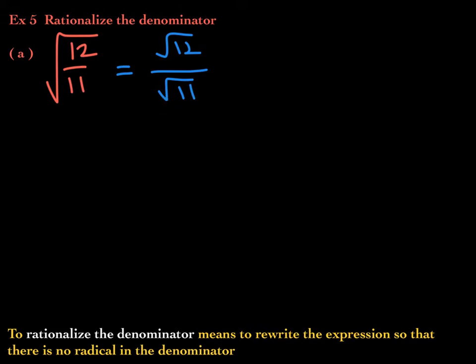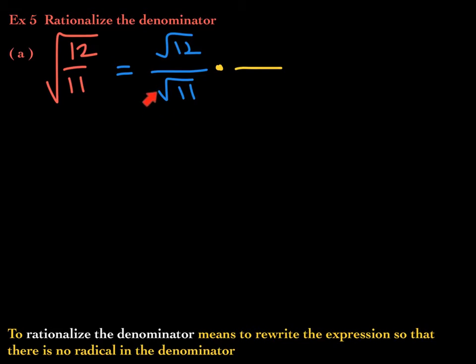The only way we can change this expression without changing its value is by multiplying by one. To multiply by one, whatever you multiply the denominator by, you must multiply the numerator by the same expression. The question is: what would I multiply this denominator by in order to get a perfect power of the index so that the radical goes away?